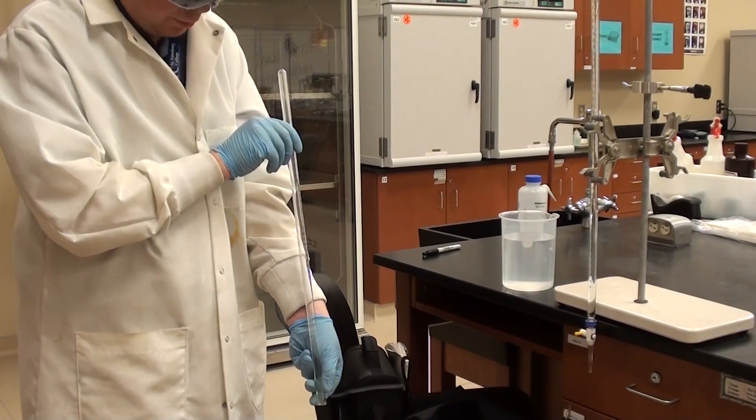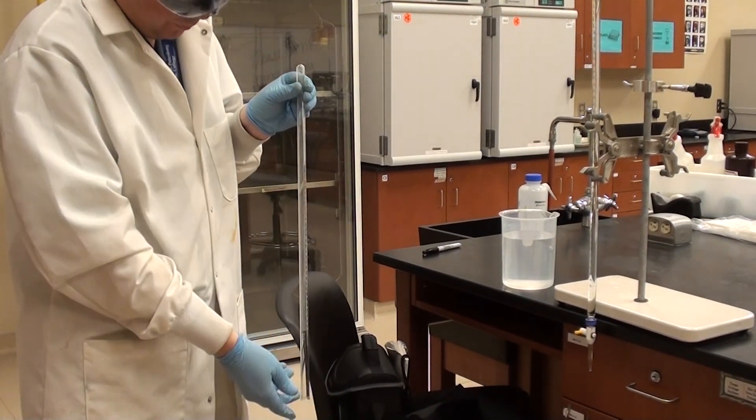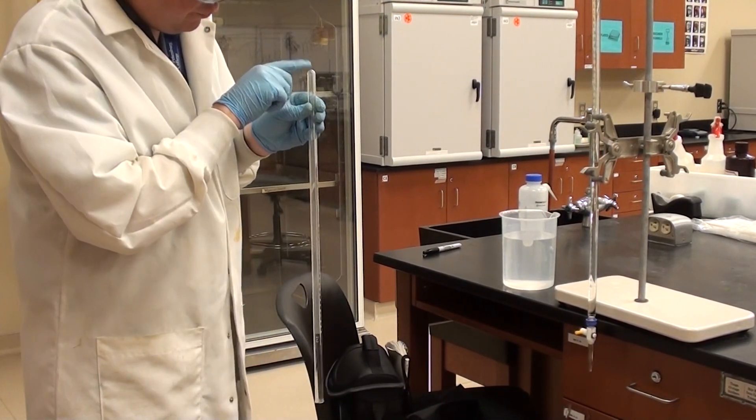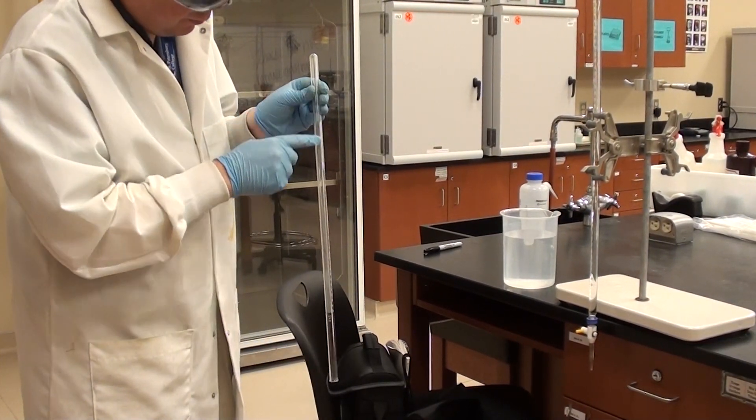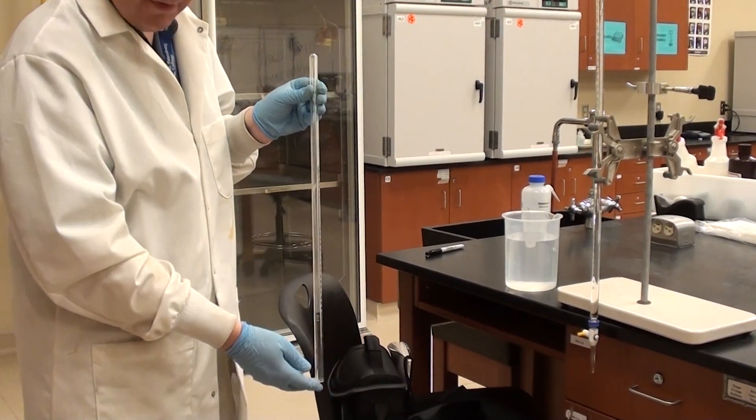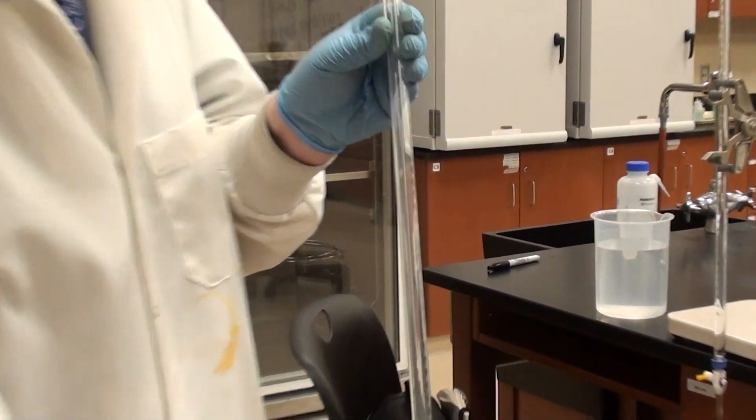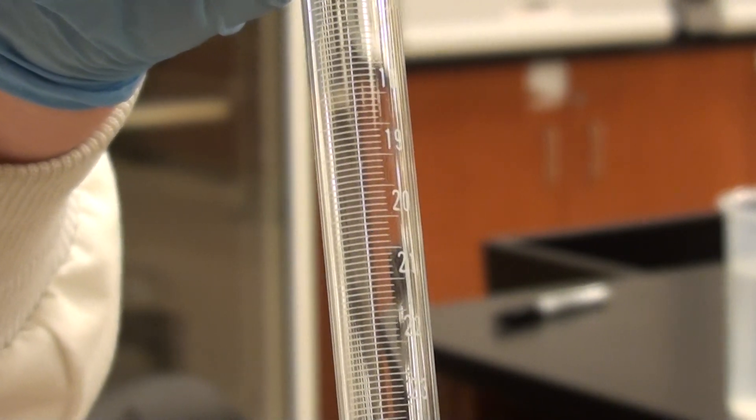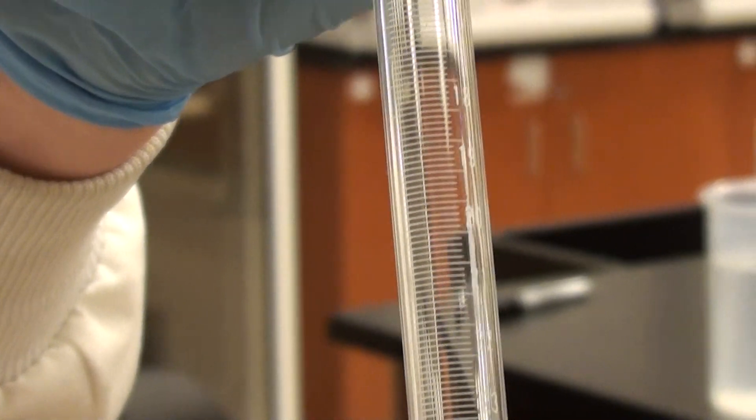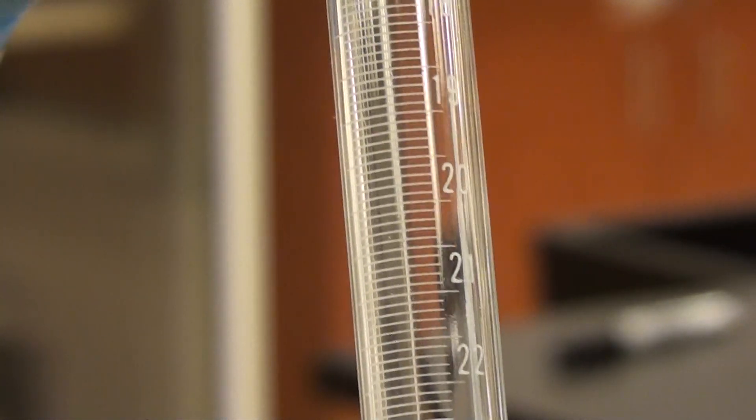So what we're looking at here is what's called a eudiometer tube. It's closed at one end and open at the other end, and it's got these little graduations on here. I'm going to move this in closer to the camera so you can get a closer view of what the graduations look like. Now the unfortunate thing about a eudiometer tube is you would hope that the graduations were accurate and that they were exactly one milliliter, but unfortunately it turns out that they're not.